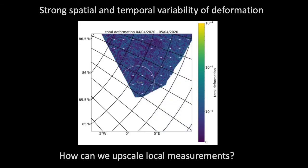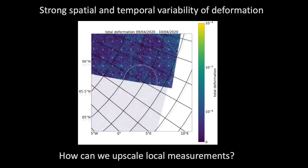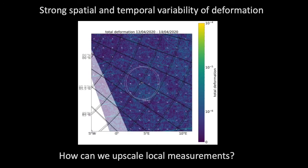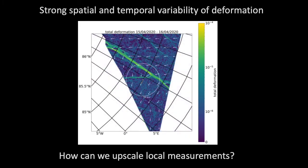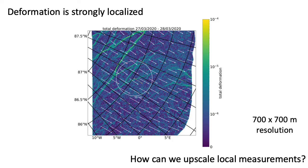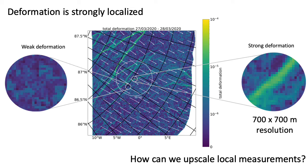The same is true for the temporal perspective. On a daily basis the appearance of a deformation zone can change. This raises the question of how we can actually upscale local measurements. Just imagine you have done an observation on March 27. At that time a shear zone had crossed the MOSAiC floe and affected processes at your measurement site, while most of the ice in the wider region remained unaffected. Since deformation events can have such a strong impact, we might need to consider where and how often such an event took place before we can upscale local measurements to a larger region.